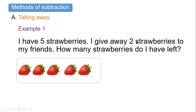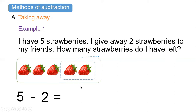I give away two strawberries to my friends, so let me take away two strawberries. How many strawberries do I have left? One, two, and three. So once we write this as a number sentence we will have five minus two equals three.